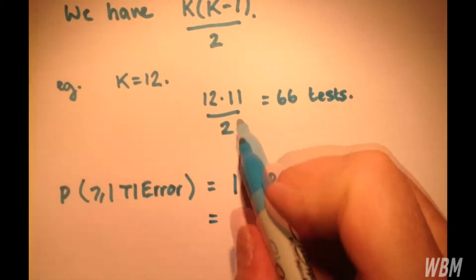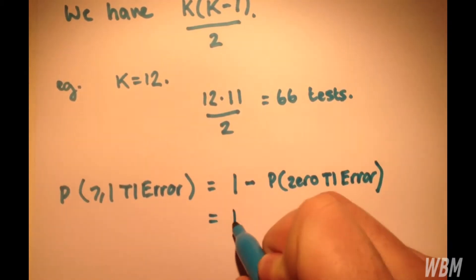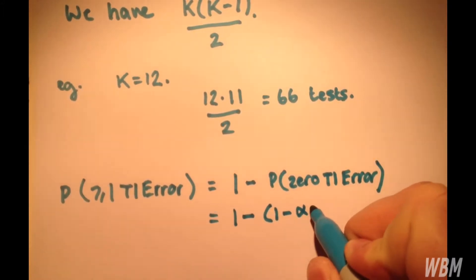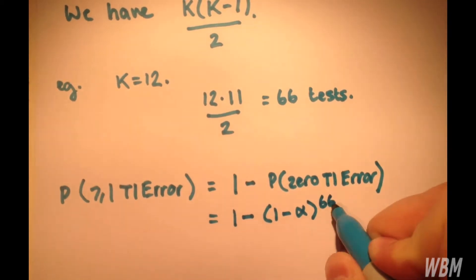And that works out, following on from this example, as being 1 minus 1 minus significance level alpha to the power of 66,